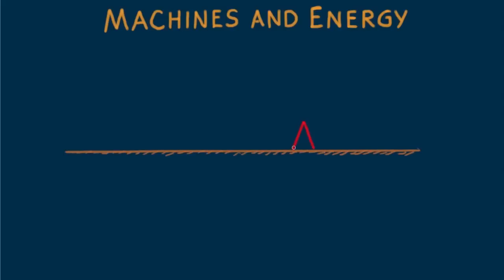The simplest machine is the lever. Centuries ago, the Greek philosopher Archimedes said that given a long enough lever and a place to stand, he could lift the world. Let's investigate this claim.